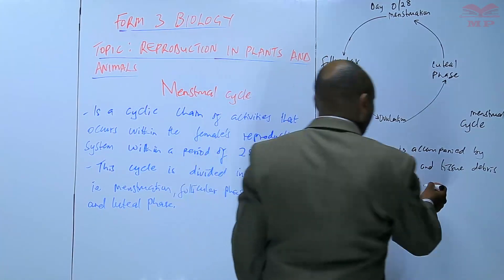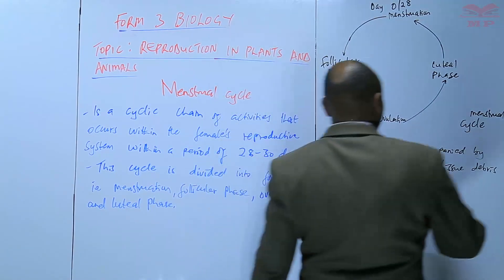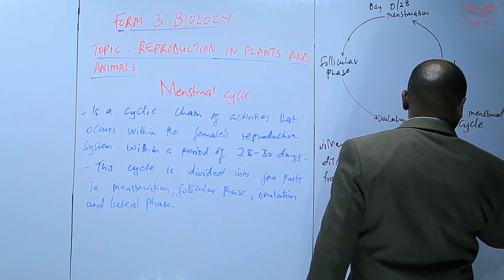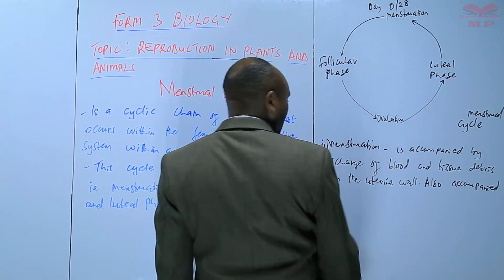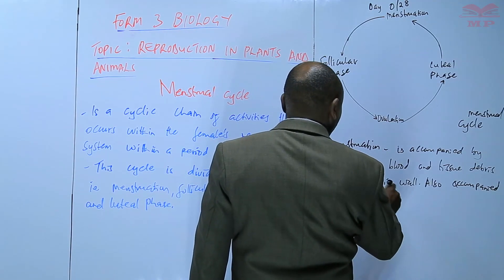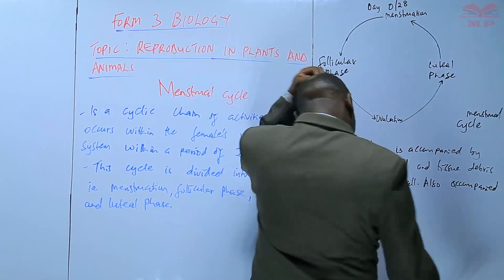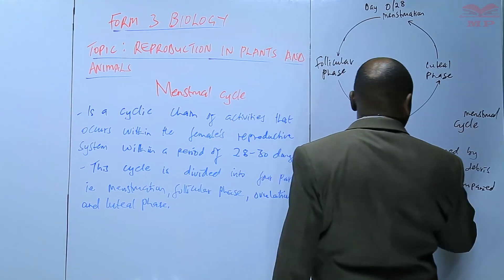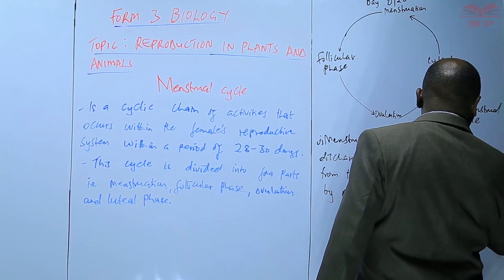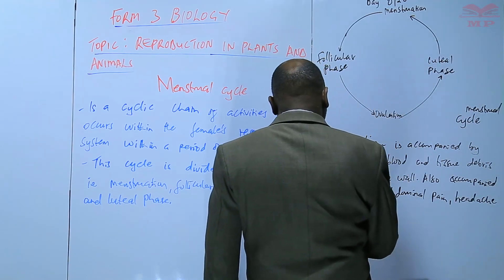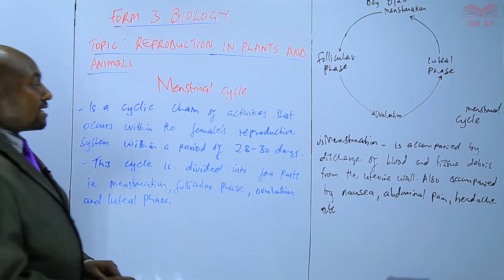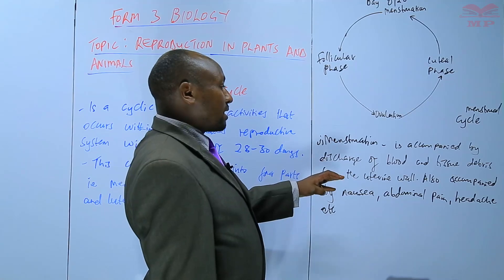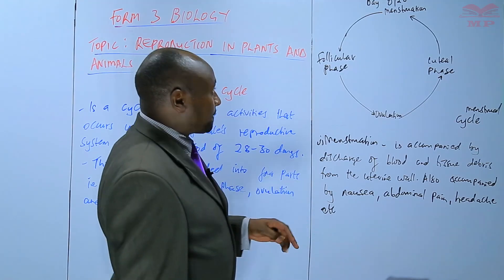Menstruation is also accompanied by nausea, feeling like vomiting, abdominal pain, and headache, etc. Those are some of the activities that accompany menstruation, which involves the discharge of blood and tissue debris.